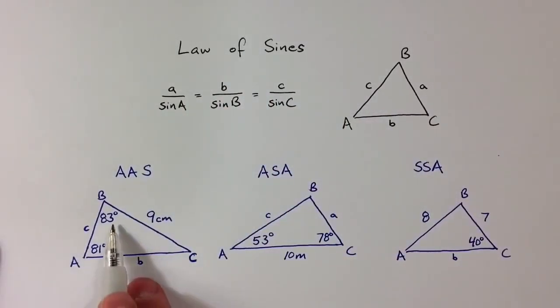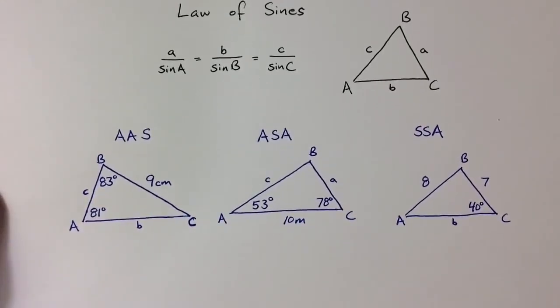And so then with the additional information, with this other angle measure, the easiest thing to figure out using the law of sines would be the value for b. So let's see what that would look like.